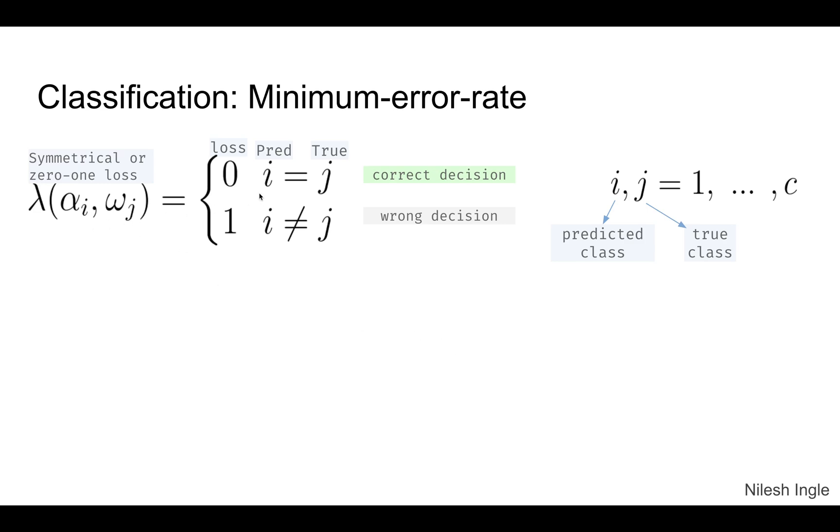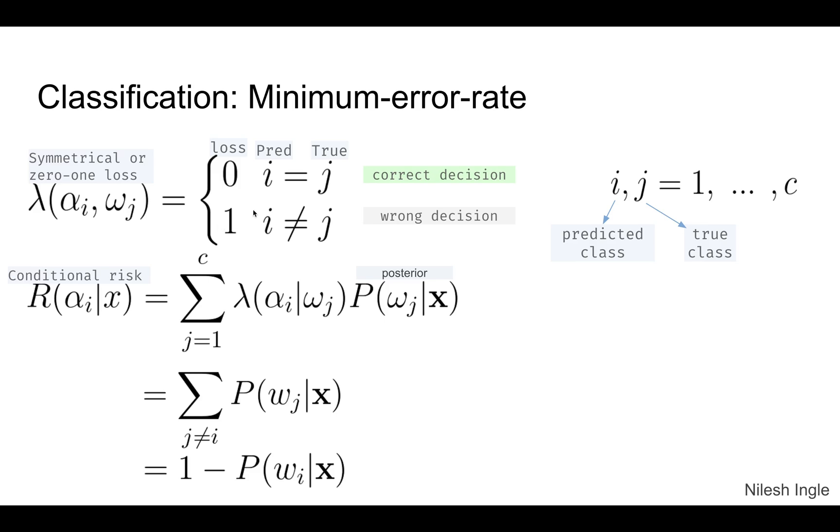What we're trying to say is that if i, which is the predicted class, equals j, which is the correct or true class, then that's a correct decision and there's no loss associated with that decision. However, if the predicted and true classes do not match, then it's an incorrect decision and there's a penalty or loss of one associated with it. This zero-one loss can be used to calculate the conditional risk.